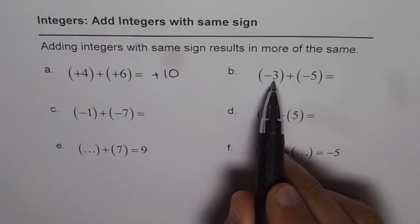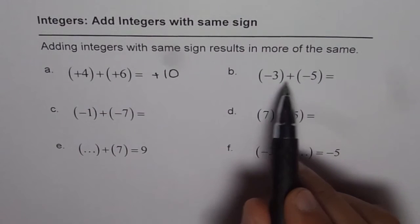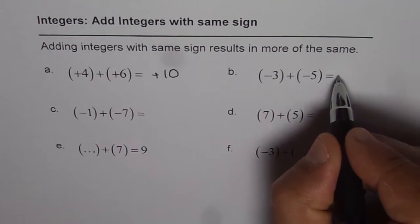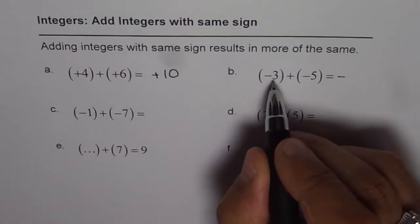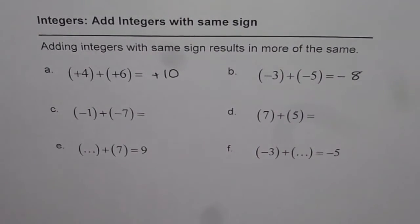Now we are adding minus 3 and minus 5. We will get more of the same. The numbers are negative, that means the answer will be negative and more of the same means 3 plus 5 is 8. That is the answer.